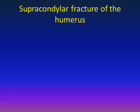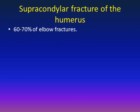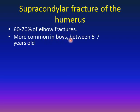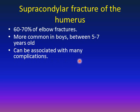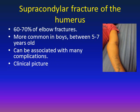Supracondylar fracture of the humerus is the most common fracture of the elbow, representing about 60–70% of elbow fractures in children. It is more common in boys and usually happens between ages 5–7. This fracture can be associated with many complications. The clinical presentation is pain, swelling, and deformity. Shown here is a 7-year-old girl who presented after falling on an outstretched hand with obvious deformity, swelling of the elbow, and a contusion on the anterior elbow.